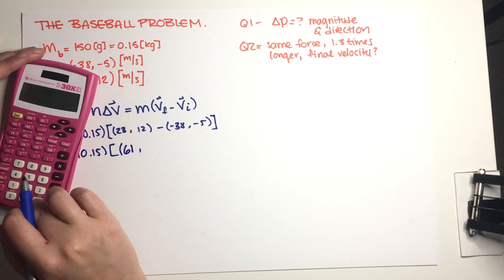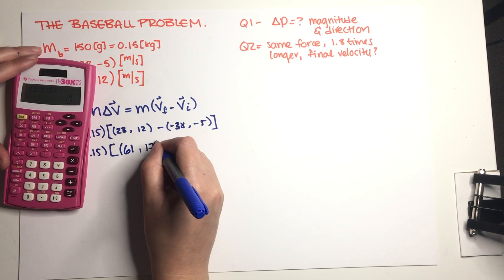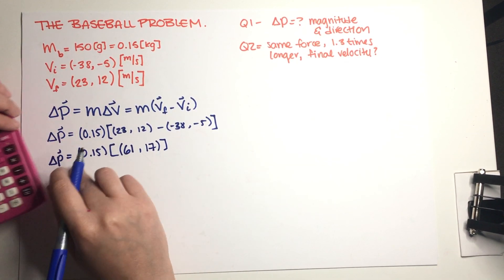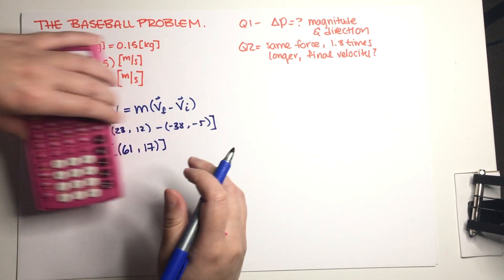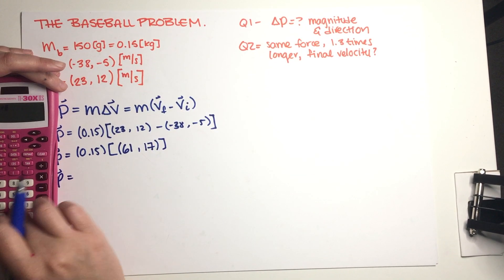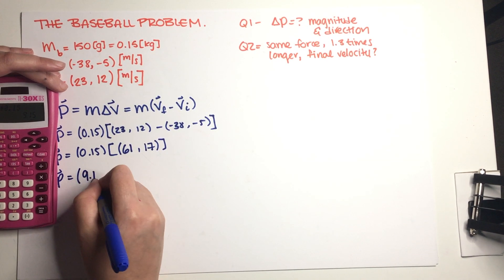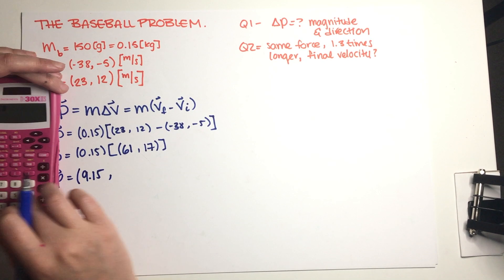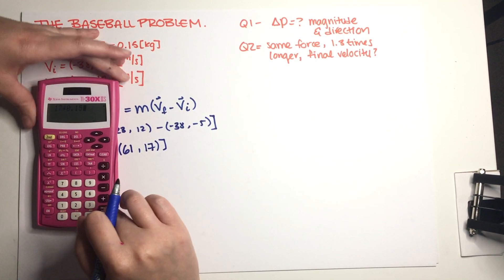So now I just need to multiply the mass on both x and y components. So 61 times 0.15 is equal to 9.15, and 17 times 0.15 is equal to 2.55.